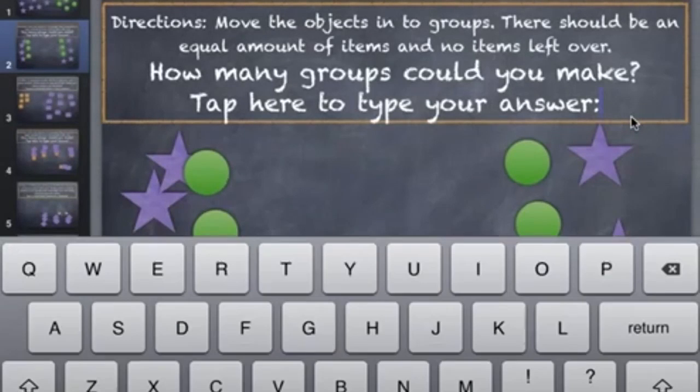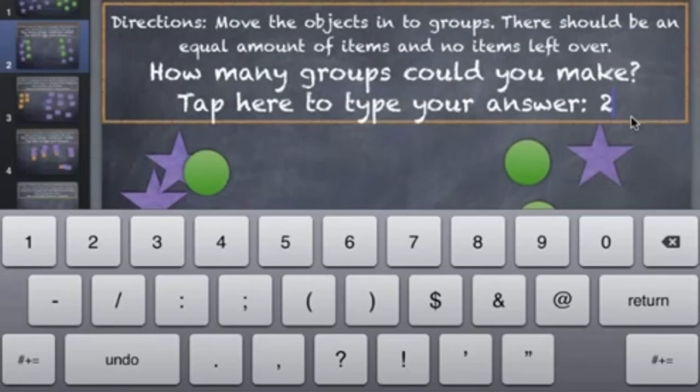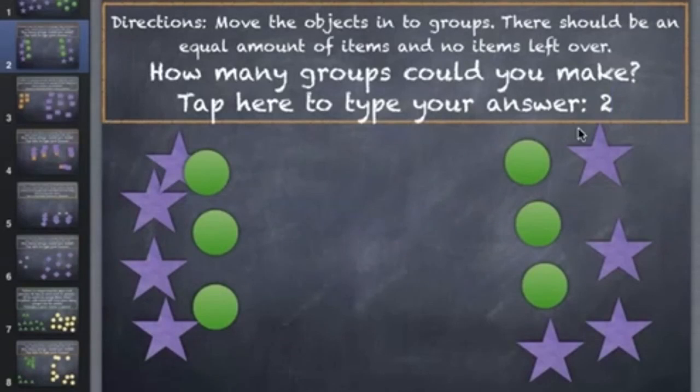So how many total groups could you make? We're going to tap here and type in an answer of two. We could make a total of two groups. So that's how you're going to do each of these investigations.